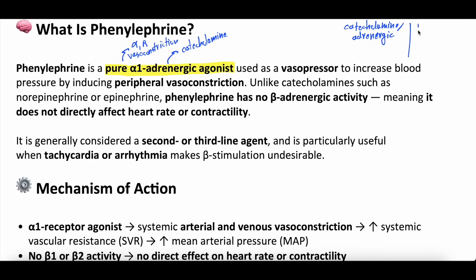The catecholaminergic or adrenergic vasopressors are things like norepinephrine, epinephrine, and phenylephrine — all working on catecholamine receptors. Whereas the non-adrenergic vasopressors are things like vasopressin, angiotensin-2, methylene blue, and hydroxycobalamin — all things we've talked about in this vasopressor and inotrope series. So phenylephrine is a pure alpha-1, works only on alpha-1 receptors, adrenergic, catecholamine-based, and agonist — meaning it stimulates those alpha-1 receptors.